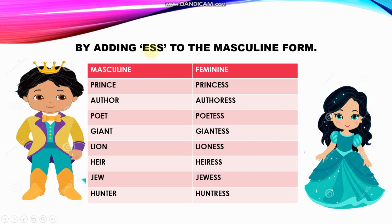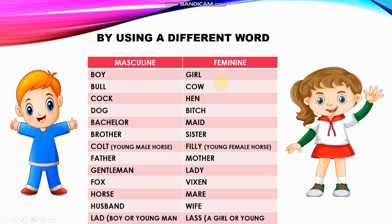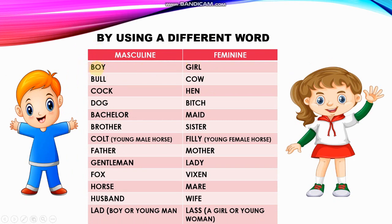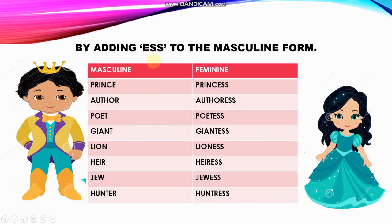Now let's look at the second type: forming the feminine by adding ESS to the masculine form. In the previous table we used different words entirely. Here instead, ESS is added directly to the masculine word. For example, prince plus ESS gives princess. Author plus ESS gives authoress. Poet plus ESS gives poetess. Giant plus ESS gives giantess. Lion plus ESS gives lioness.